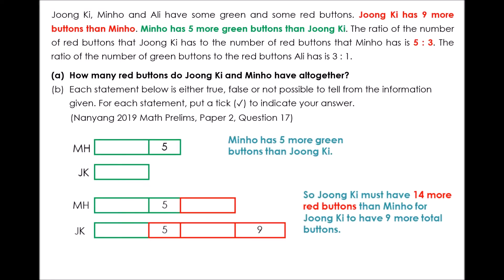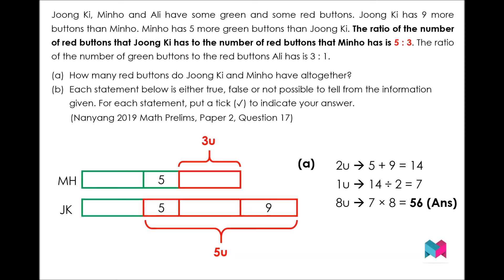This means that Jungki must have 14 more red buttons than Minho, in order to not only cover the five more green buttons that Minho has, but also to allow Jungki to have nine more buttons overall. Since the ratio of red buttons that Jungki has to Minho is 5 to 3.